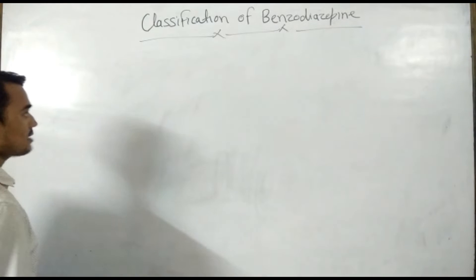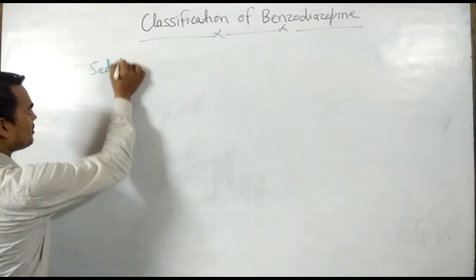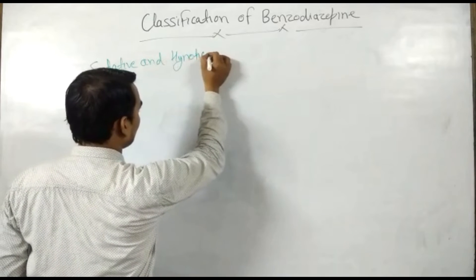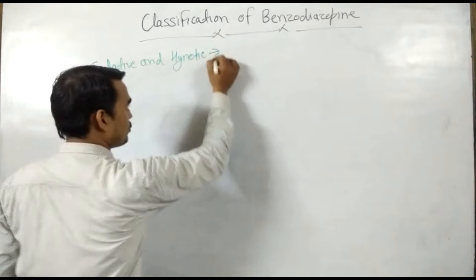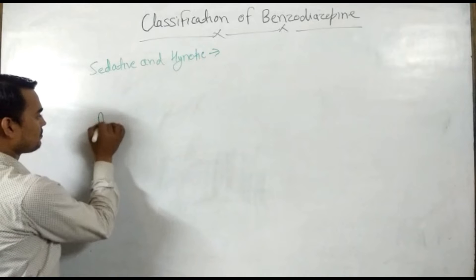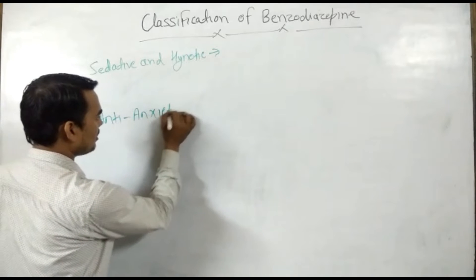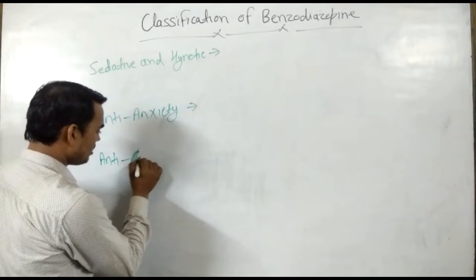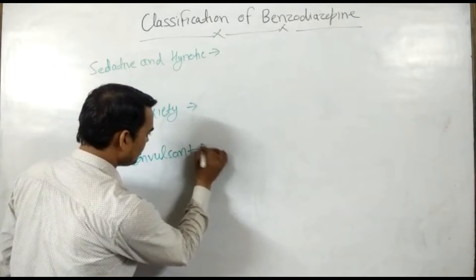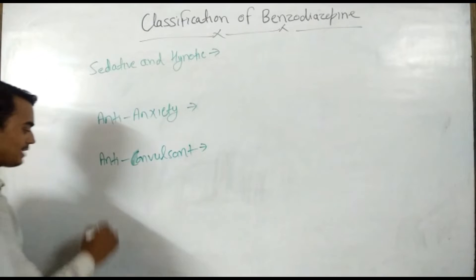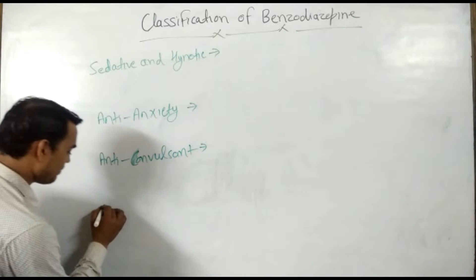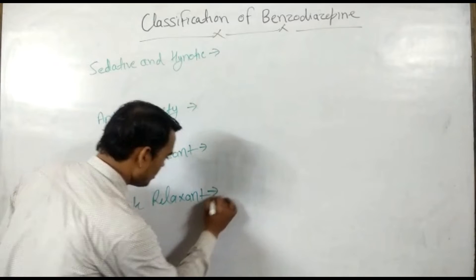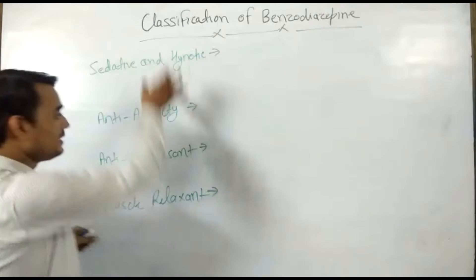The first action is that some benzodiazepines have sedative and hypnotic action. The second subclass is anti-anxiety — some benzodiazepines have anti-anxiety action. Some benzodiazepines have anti-convulsant action, and next is muscle relaxant property. So basically benzodiazepines have anti-anxiety action as a key property.